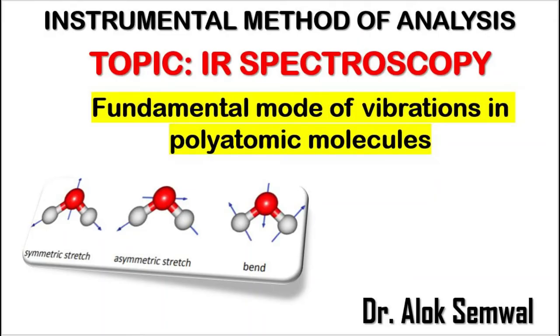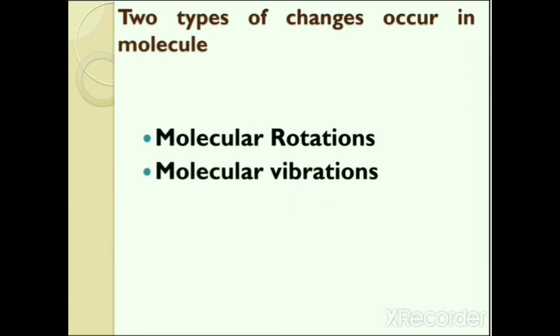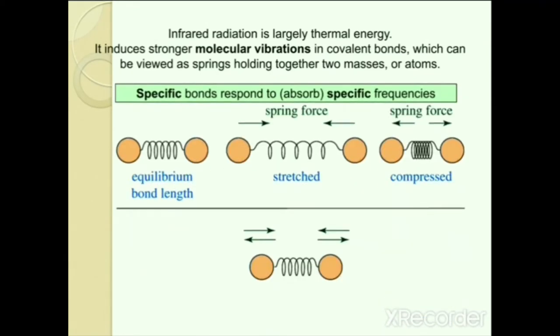Next is the fundamental mode of vibrations in polyatomic molecules. Generally two types of changes occur in molecules: molecular rotations and molecular vibrations. Molecular rotations are of very little use in analytical chemistry, while molecular vibrations are very important in IR spectroscopy. The positions of atoms in a molecule are not fixed — they are subject to a number of different vibrations. Infrared radiation is largely thermal energy; it induces stronger molecular vibrations in covalent bonds. Consider a spring holding two masses as a bond holding two atoms — specific bonds absorb and respond to specific frequencies, causing changes in their bond length.